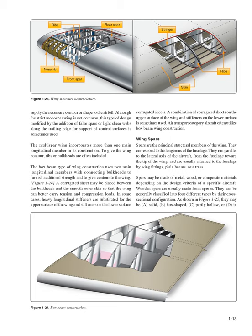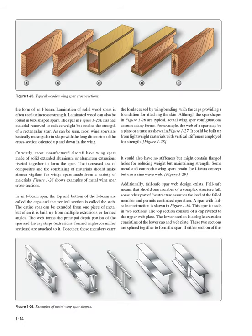Wing spars are the principal structural members of the wing, corresponding to the longerons of the fuselage. They run parallel to the lateral axis of the aircraft, from the fuselage toward the tip of the wing, and are usually attached to the fuselage by wing fittings, plane beams, or a truss. Spars may be made of metal, wood, or composite materials depending on the design criteria of a specific aircraft. Wooden spars are usually made from spruce and can be classified into four different types by their cross-sectional configuration: solid, box-shaped, partly hollow, or in the form of an I-beam.